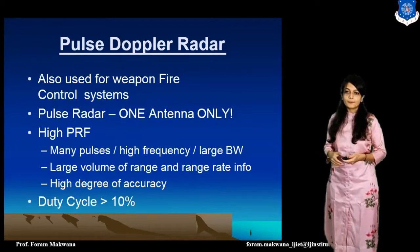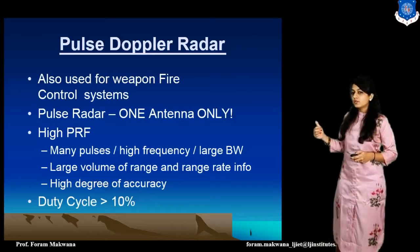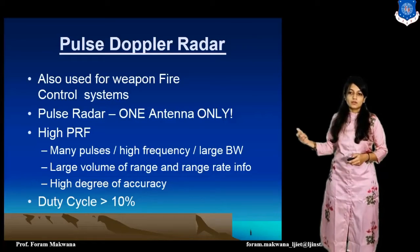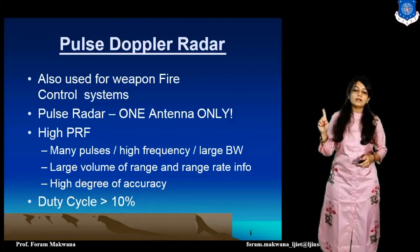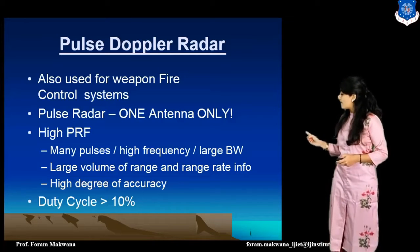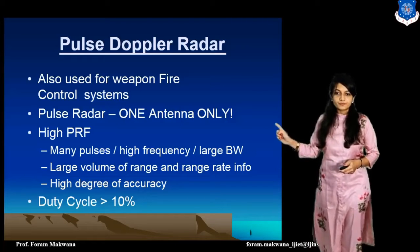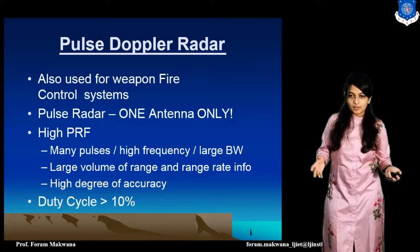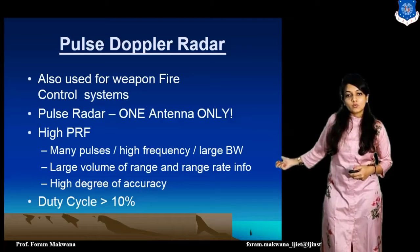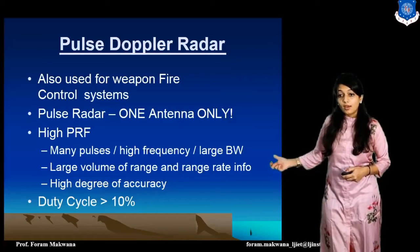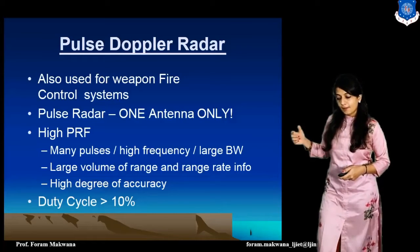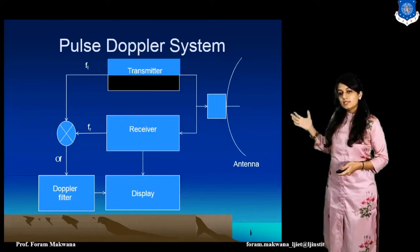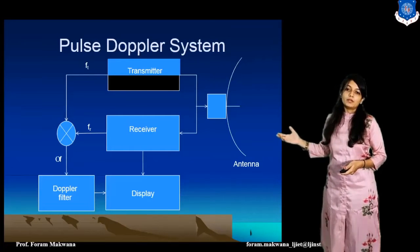Now focusing on the Pulse-Doppler radar: it is used for weapon fire control systems and uses only a single antenna. It requires a high pulse repetition frequency because many pulses are transmitted — high frequency and large bandwidth. We are able to get a large unambiguous range as well, with higher accuracy. For this system, the duty cycle is more than 10%. This is the block diagram of the Pulse-Doppler radar.